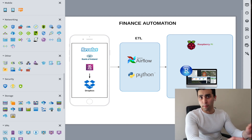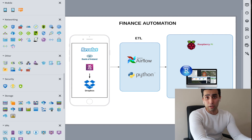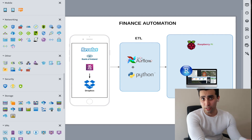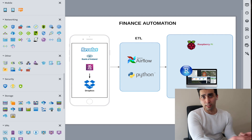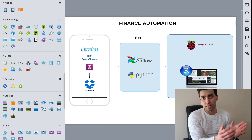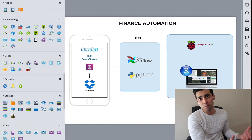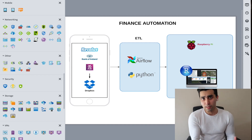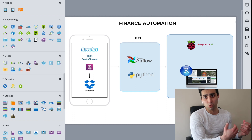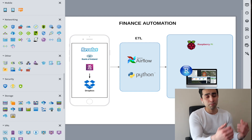Without wasting any more time, let's begin coding. First I'll code Phase 1, which is the actual Python code to do all the data processing, and then we'll build the ETL part to automate the whole script to run every half hour.